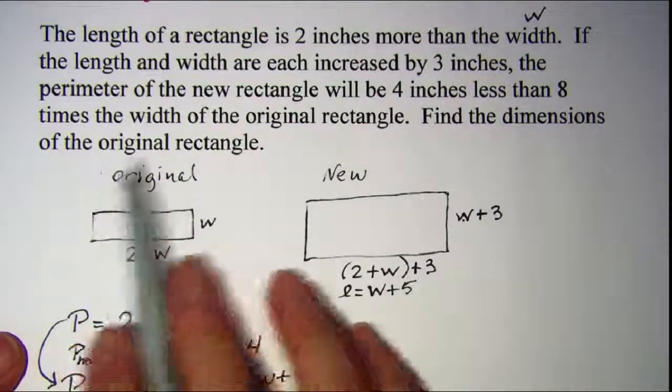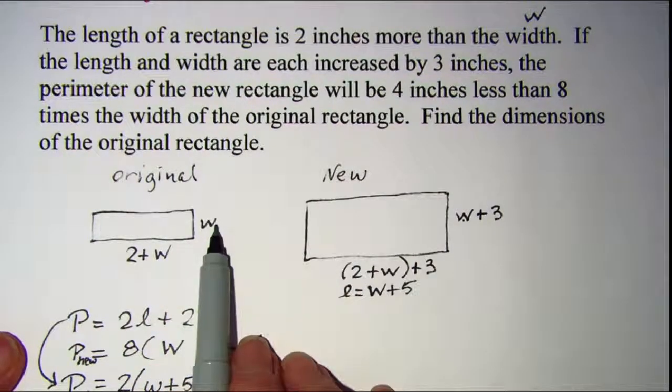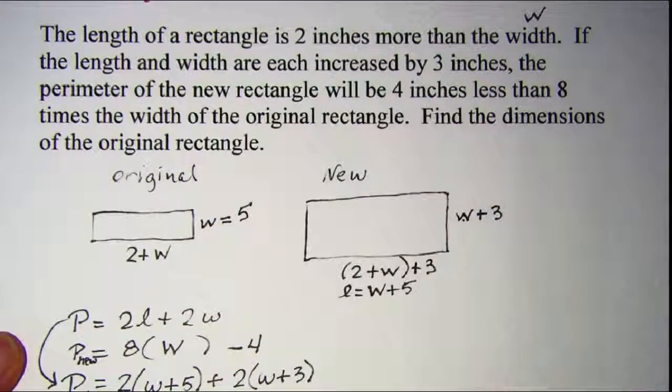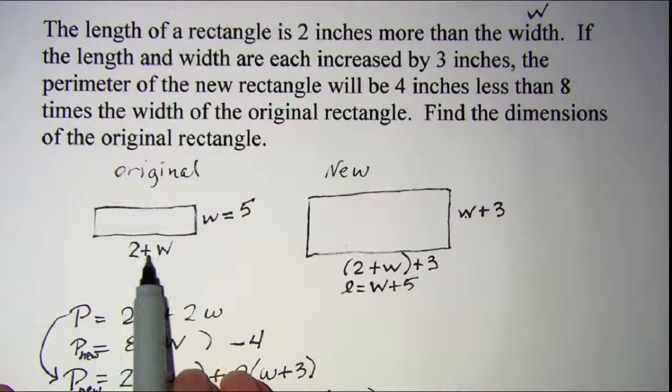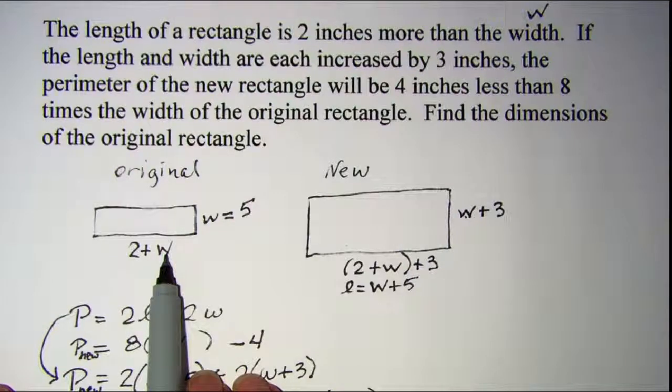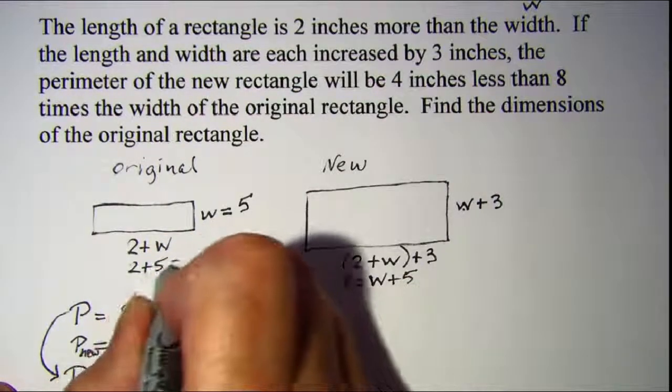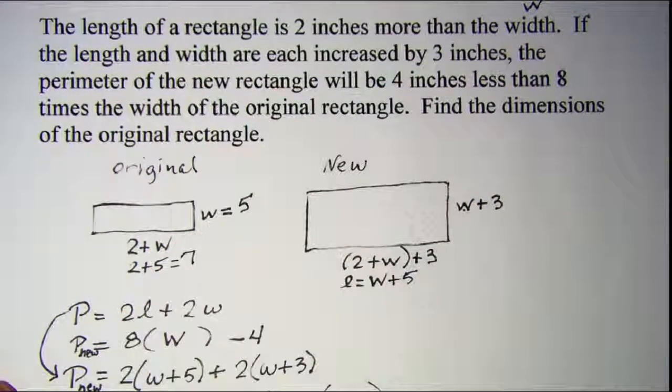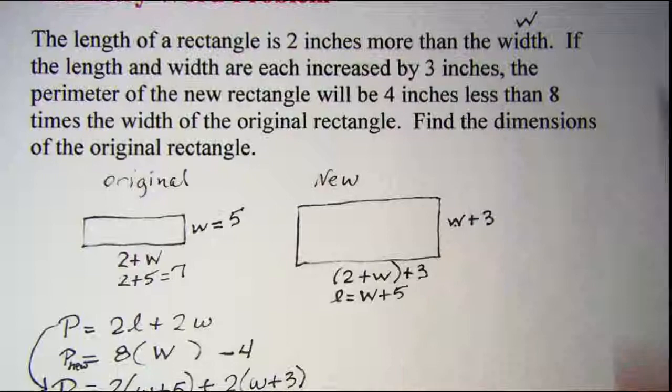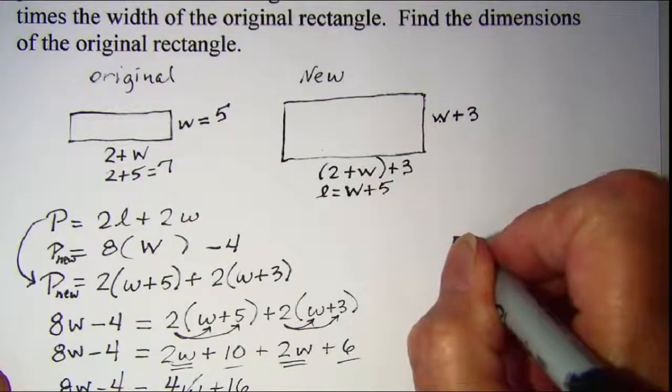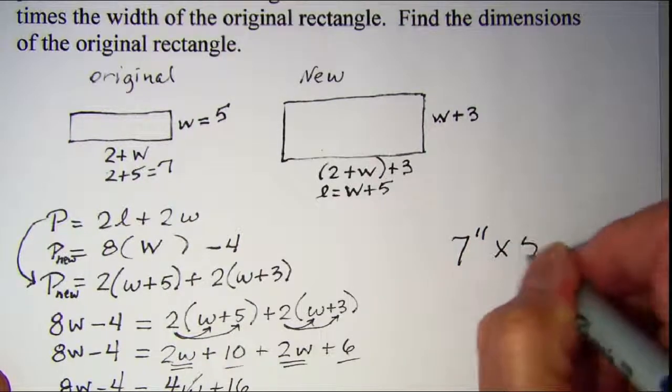Now our question asked for the dimensions of the original rectangle. So I know my width is 5. My length is going to be 2 + w or 2 + 5. So 2 + 5 is 7. So we can write our answer. These were inches. Dimensions were inches, and so my dimensions are 7 inches by 5 inches.